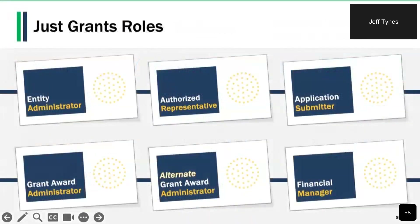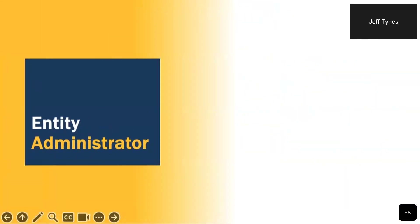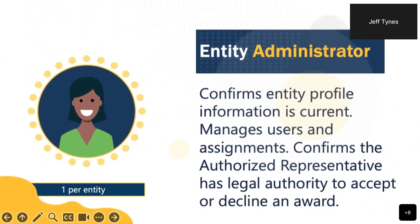User roles allow specific functions and features in JustGrants. A user can have one or more roles assigned based upon the type of work they need to do. The Entity Administrator, in addition to managing users and keeping the entity profile current, confirms the authorized representative's legal authority to enter into contracts, grants, and cooperative agreements with the federal government on behalf of your entity. Entity administrators also have read-only access to all applications and awards in JustGrants, providing a bird's-eye view of everything.